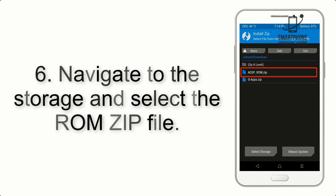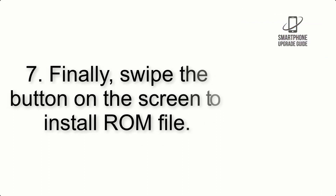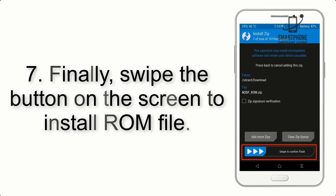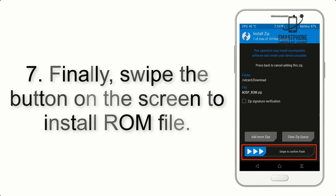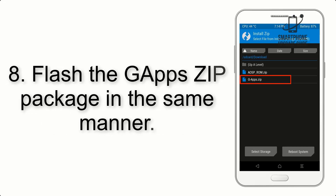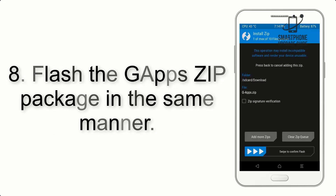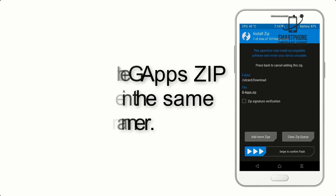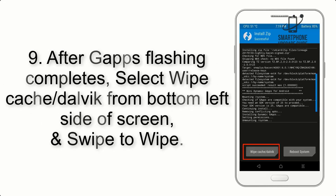Step 5: Go back to the recovery main screen and tap on the Install button. Step 6: Navigate to the storage and select the ROM zip file. Step 7: Finally, swipe the button on the screen to install the ROM file.